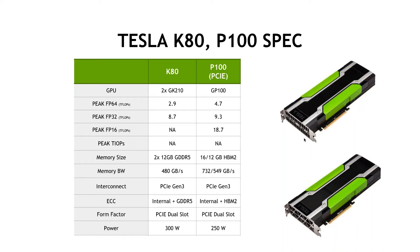The Tesla K80 used to be the most popular data center GPU ever built. But now the Tesla P100 is the most powerful data center GPU available on the cloud today, with a peak floating point performance of 4.7 teraflops of 64-bit performance — about 62 percent higher than the K80. The P100 comes with a single GPU, while the K80 board comes with two GPUs in a single board.